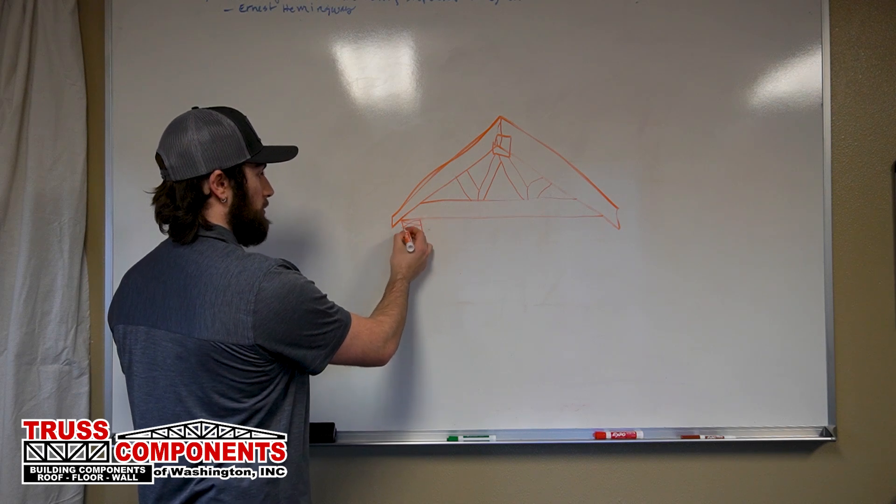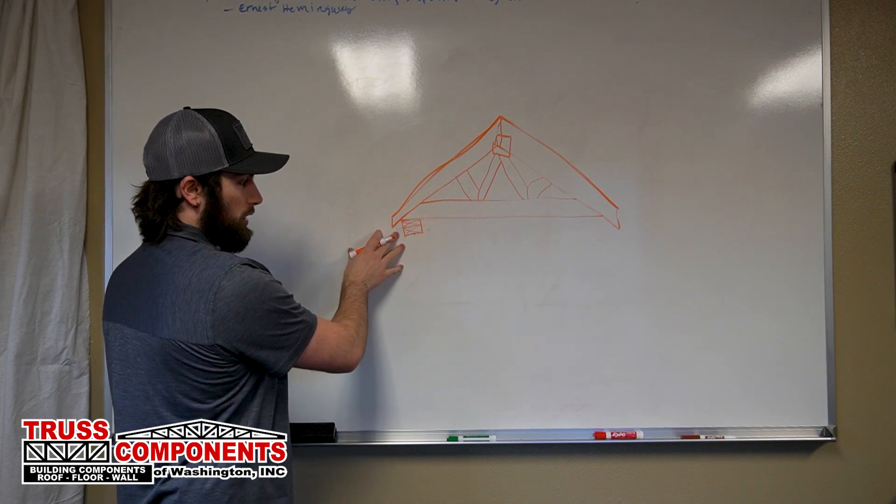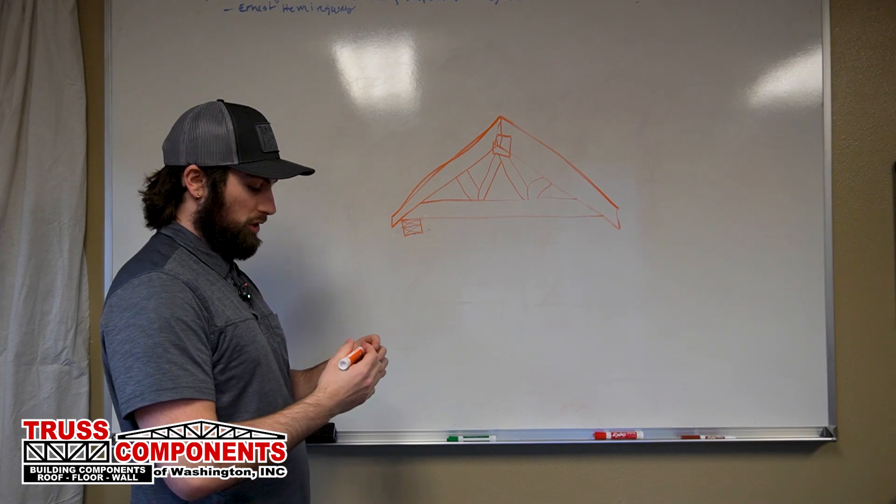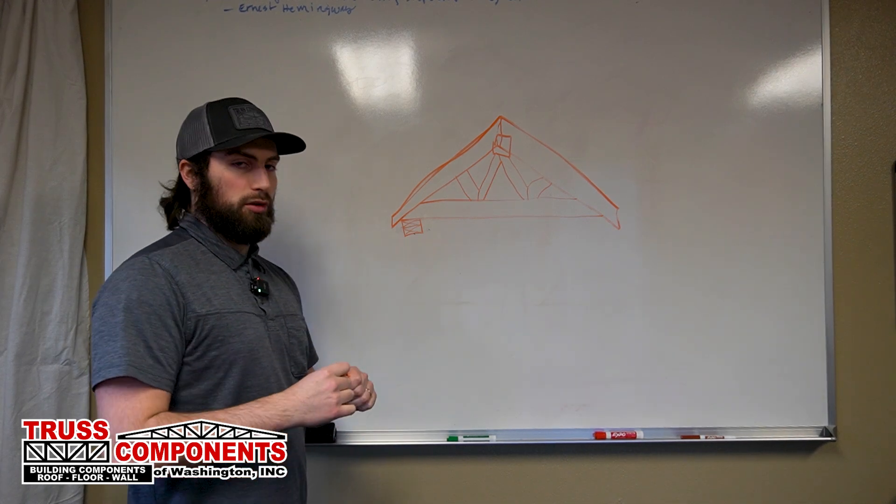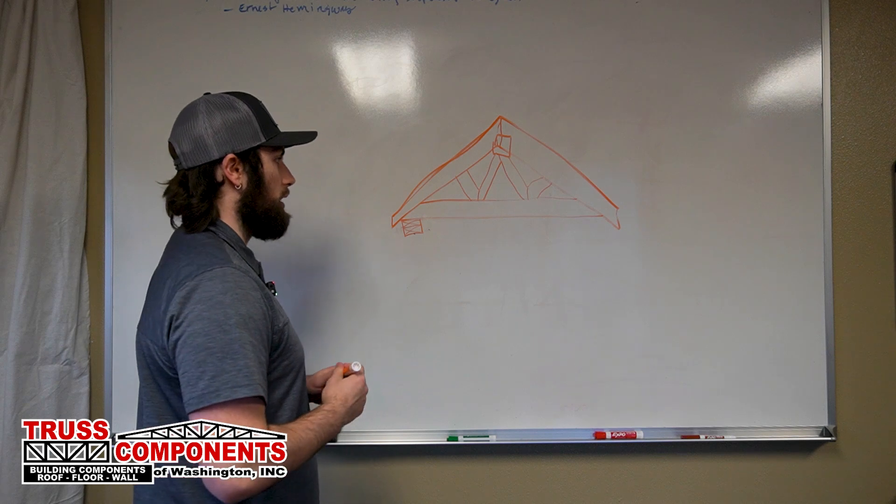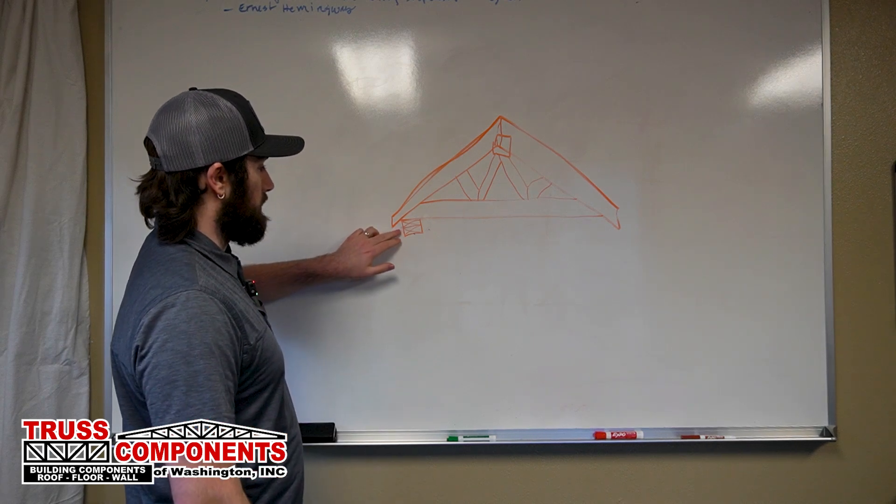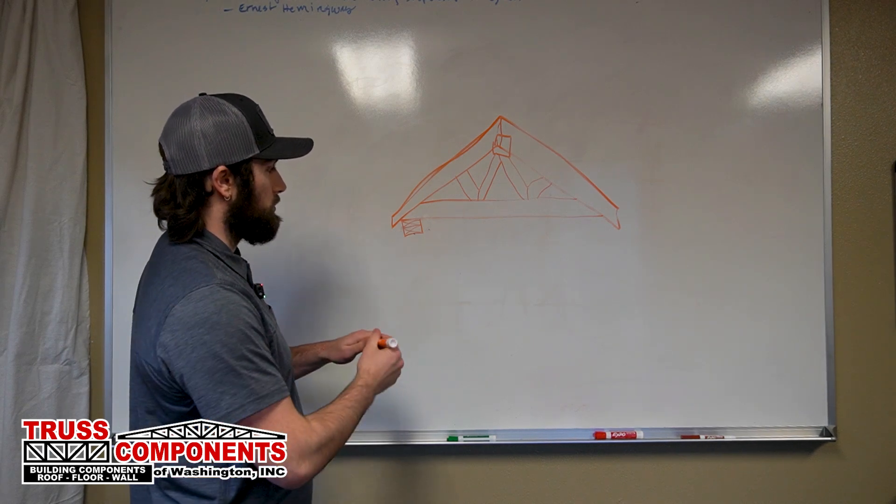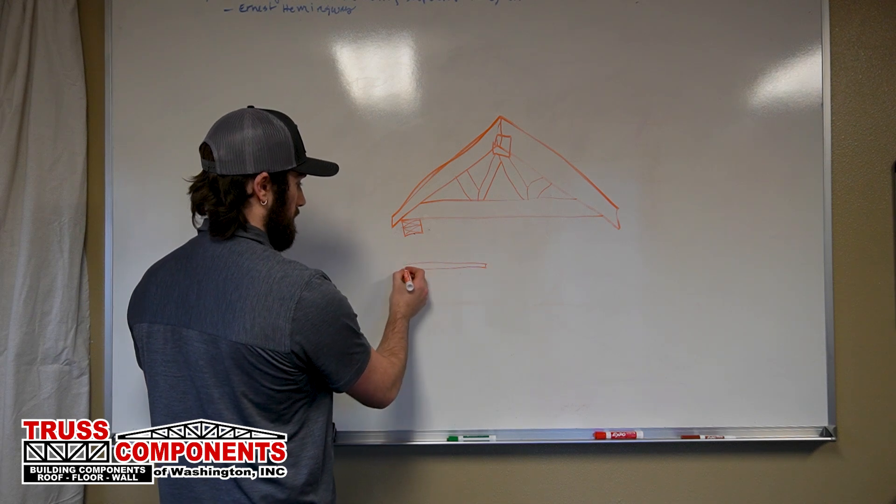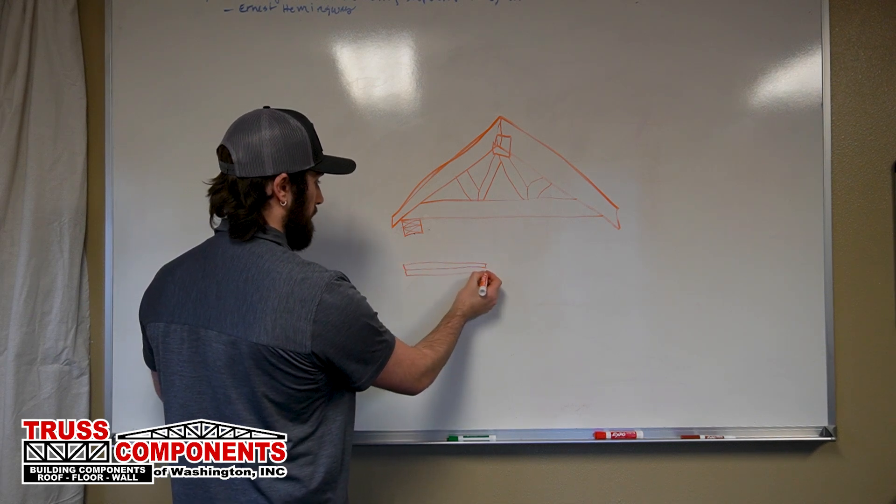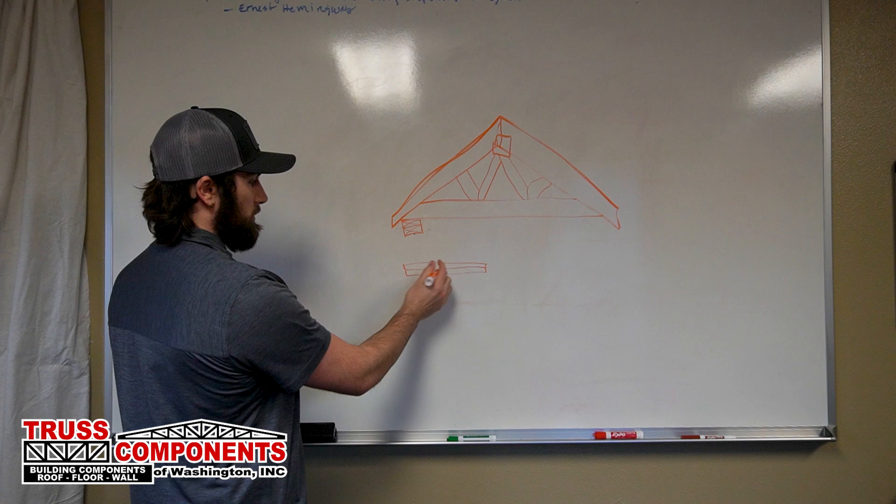Now this is typically how we draw a bearing. It's referred to as a double plate. That gets into a little bit more of the wall anatomy, but typically in the top of the wall you have two two-by-four members running in line with the wall and that supports your truss.